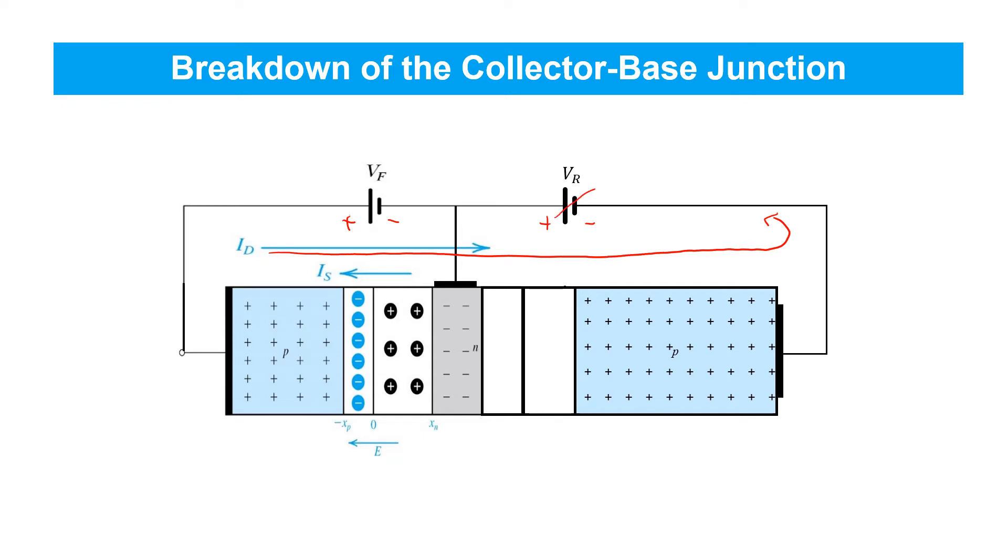Now imagine increasing the reverse bias voltage applied between base and collector. As you do so, the width of this depletion region will increase. The electric field intensity will increase. And we know that any PN junction with a sufficient reverse bias voltage applied will start to conduct current in the reverse direction. And it's called breakdown of the PN junction. And that can occur in the BJT for the collector base junction. So breakdown of the collector base junction occurs when the reverse bias voltage applied between base and collector exceeds a certain threshold.